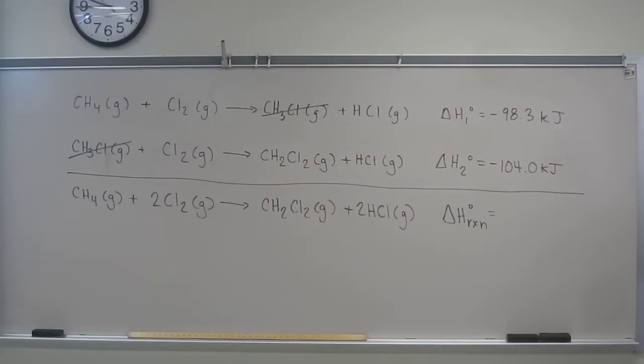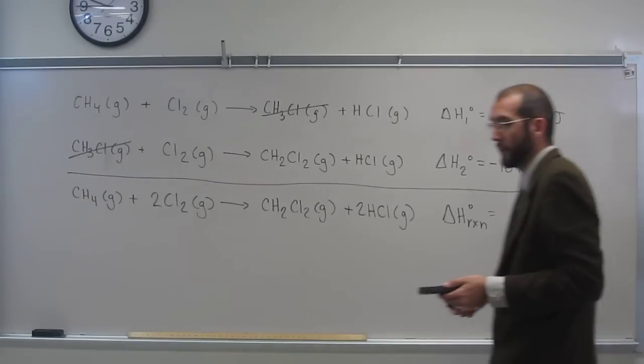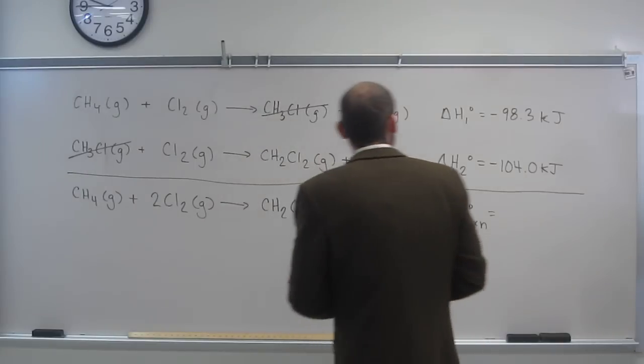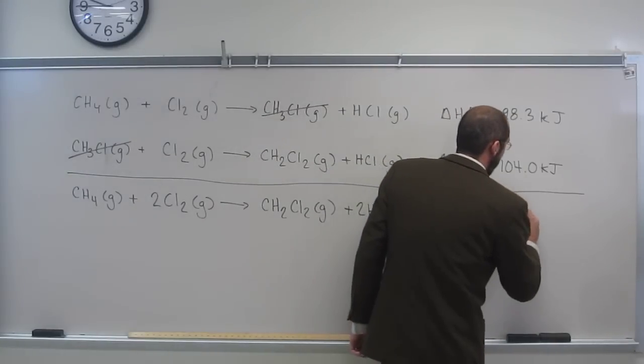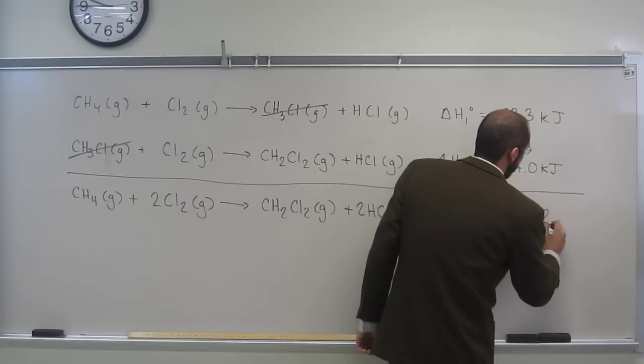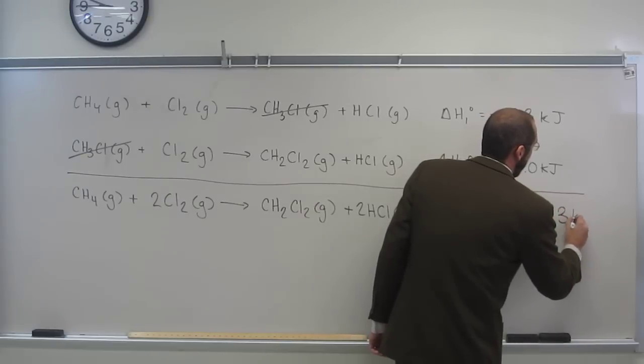So let's go ahead and add those together on our calculator, so negative 98.3 plus minus 104, and 104.0 that is, and if we're going to the right amount of sig figs, this is going to be negative 202.3 kJ.